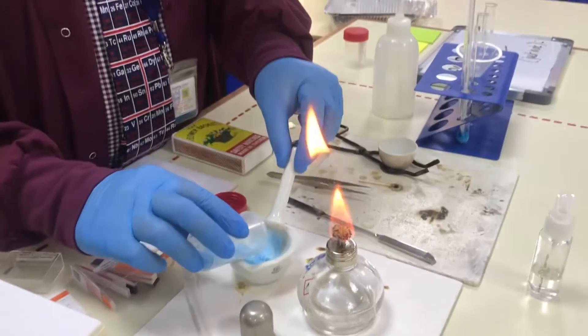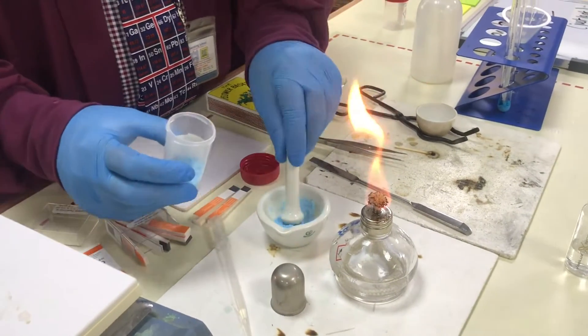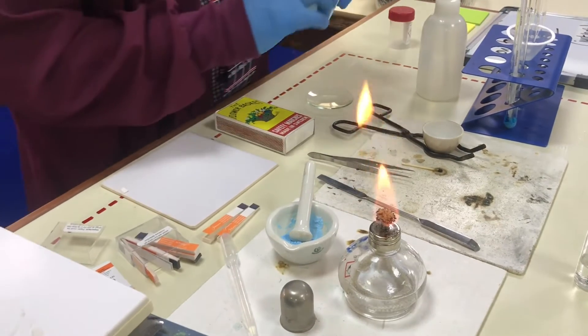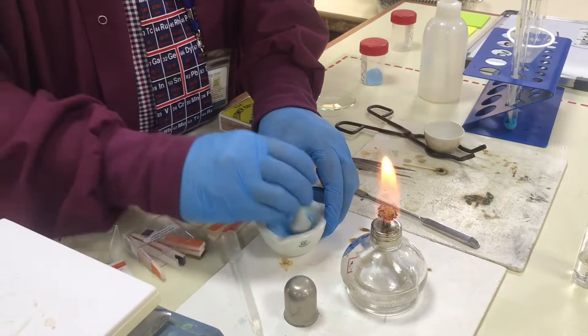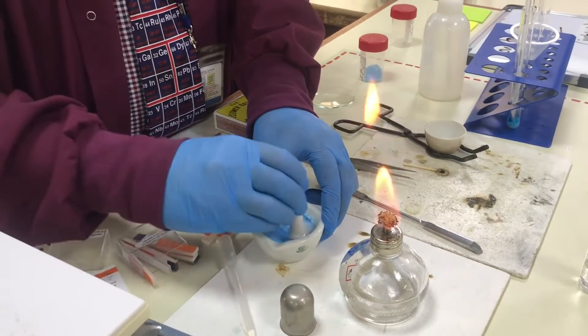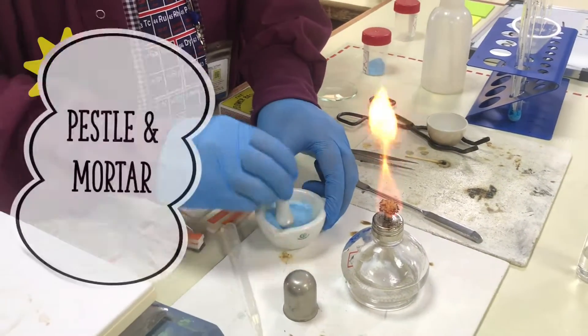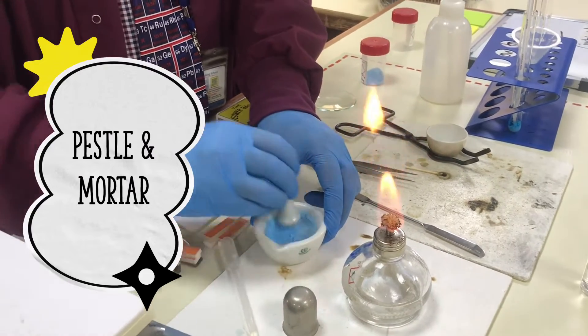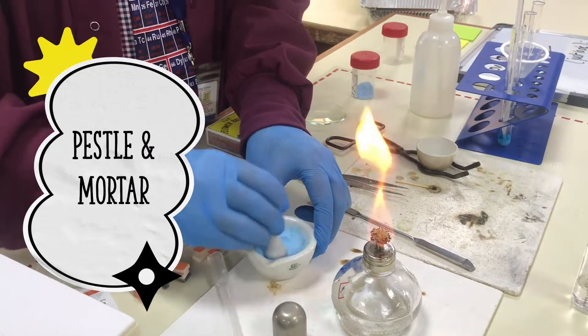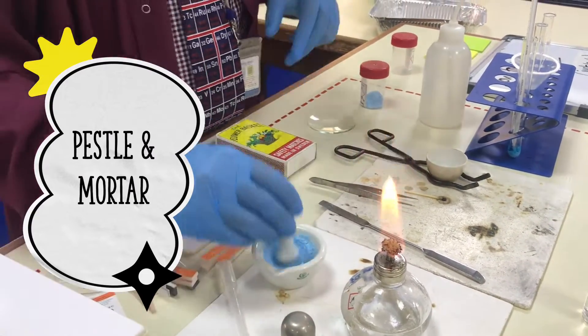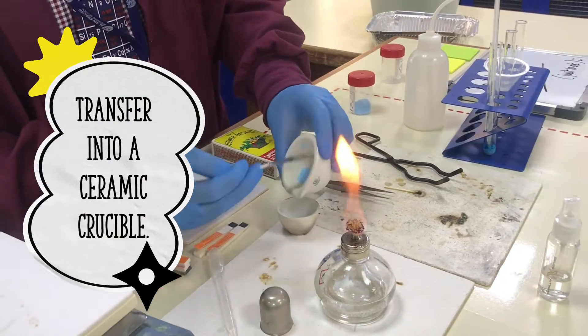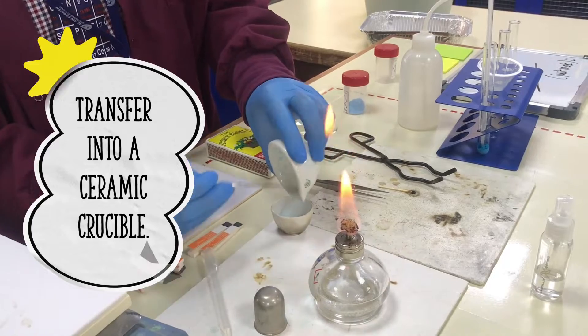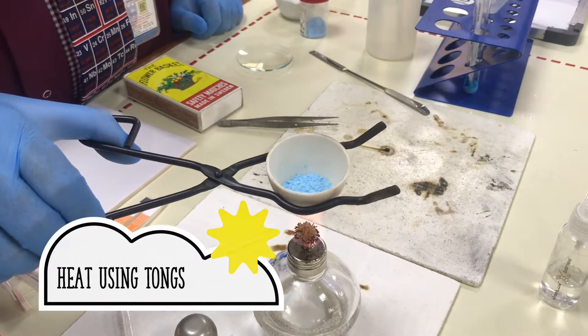I'm going to place it into a mortar and I'm going to use a pestle to pound the copper 2 sulfate to get it to very fine sized grains. It takes a bit of time.